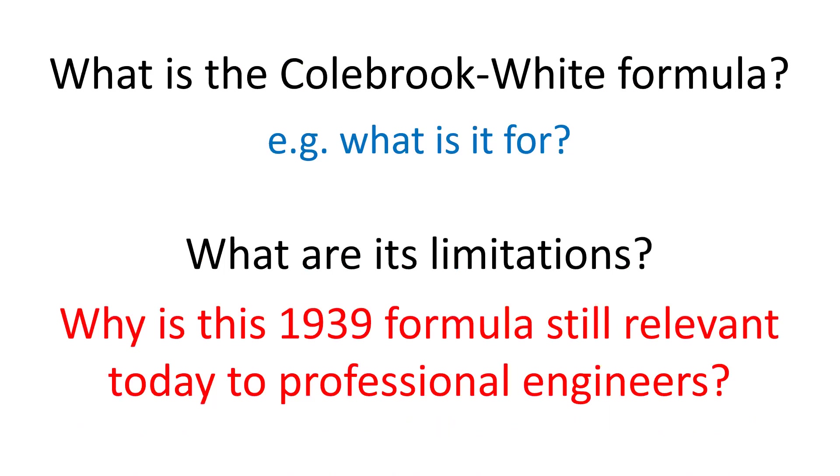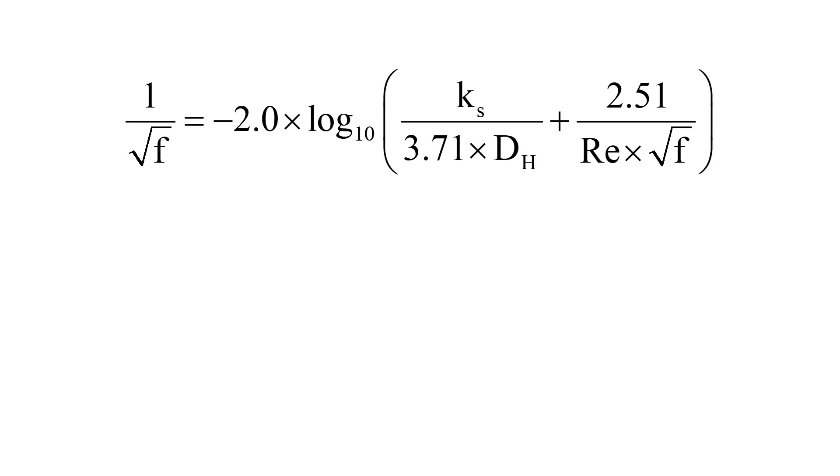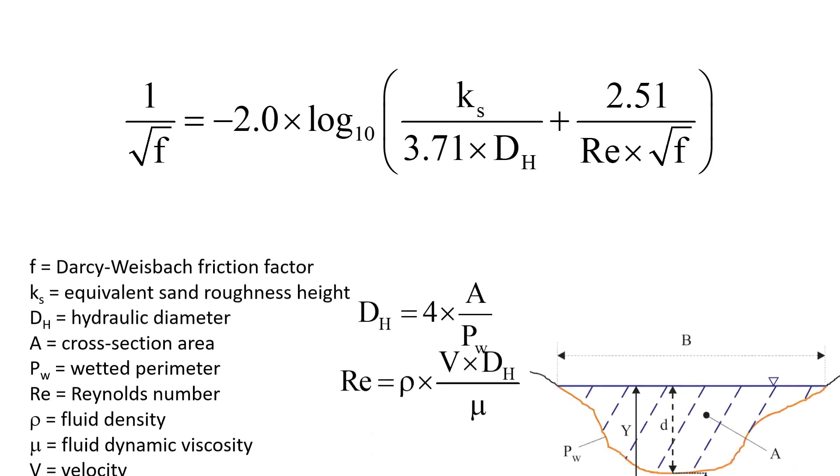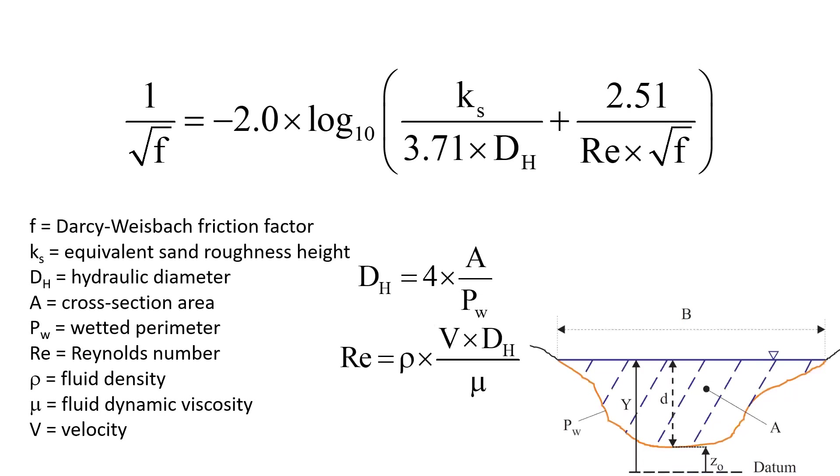This is the Colebrook-White formula in which f is the Darcy-Weisbach friction factor, k_s is the equivalent sand roughness height, D_h is the equivalent pipe diameter or hydraulic diameter, and Re is the Reynolds number.